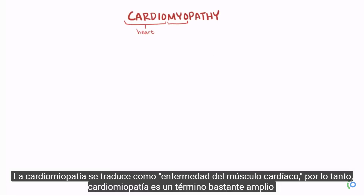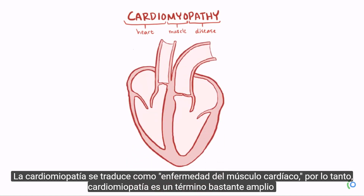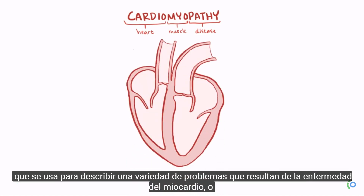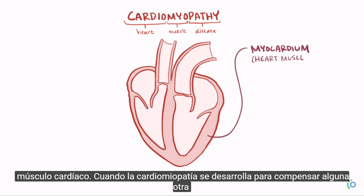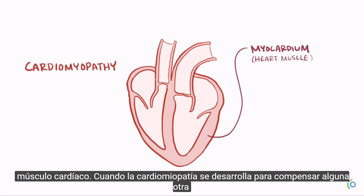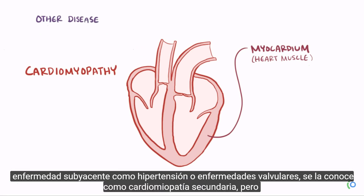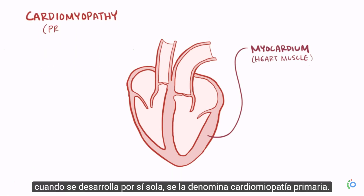Cardiomyopathy translates to heart muscle disease, so cardiomyopathy is a broad term used to describe a variety of issues that result from disease of the myocardium, or heart muscle. When cardiomyopathy develops as a way to compensate for some other underlying disease, like hypertension or valve diseases, it's called secondary cardiomyopathy, but when it develops all by itself it's called a primary cardiomyopathy.